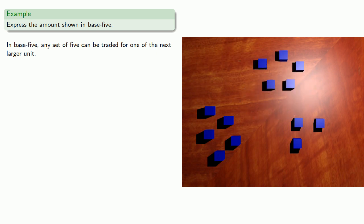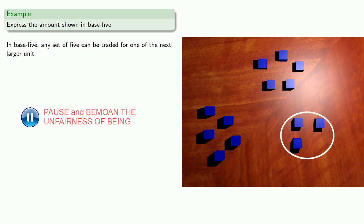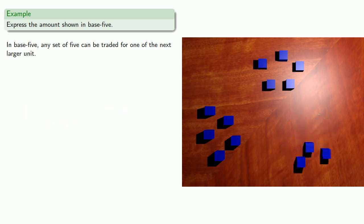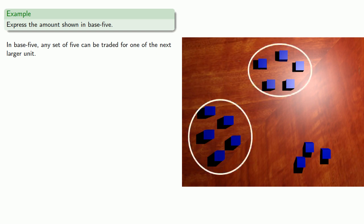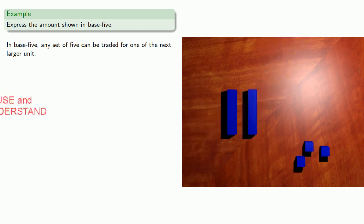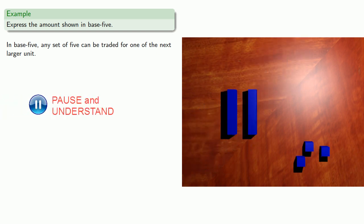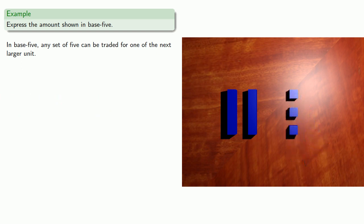And we don't have quite enough left here to make another set. Now we can trade our sets of 5 for 1 of the next larger unit. So let's make those trades. And so we see that all together, we have 2 medium and 3 small.